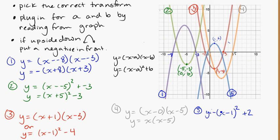So again pick your correct transform based on the information given to you in the graph. Plug in for the values of a or b depending on whether the intercepts or the point where the vertex is. And just watch out for a positive or a negative parabola if you need to put the negative in front of your equation.